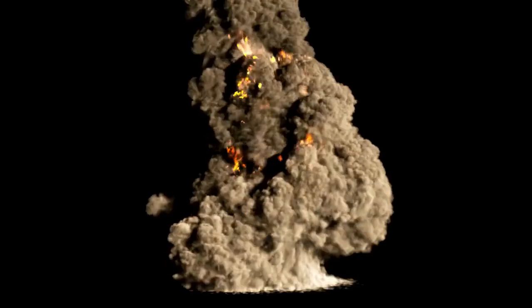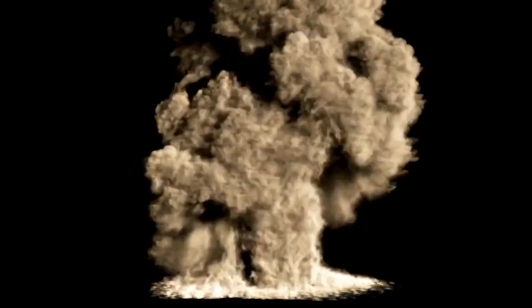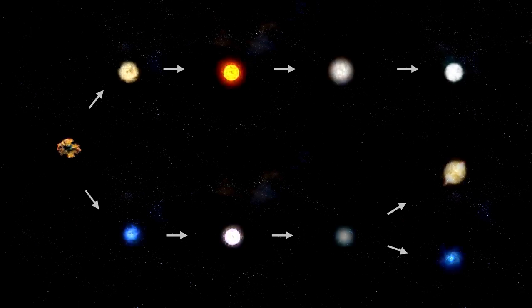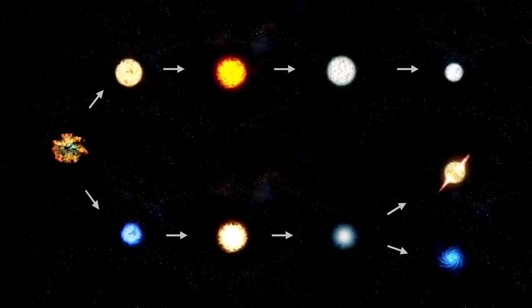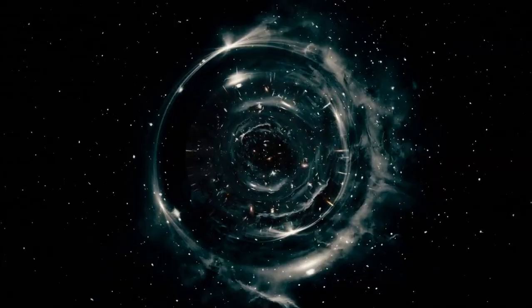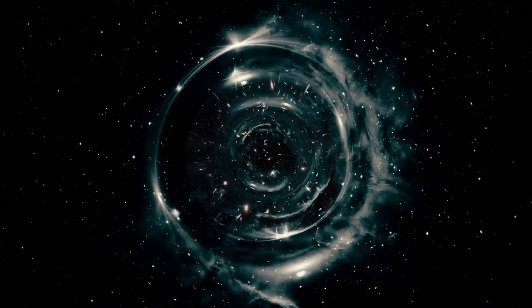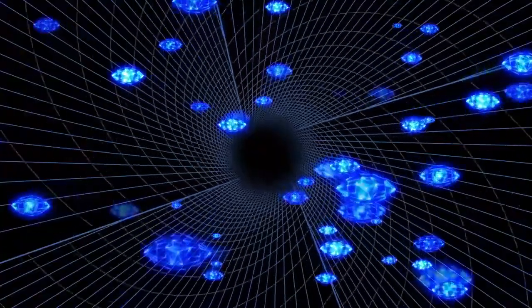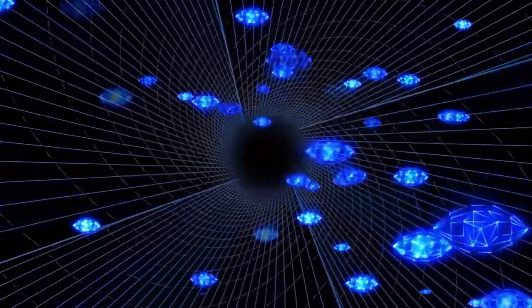When the explosion occurs, Betelgeuse will release an immense amount of energy, more in a few minutes than our sun will emit over its entire lifetime. This energy will take the form of visible light, gamma rays, and other forms of radiation. The shockwave from the explosion will travel outward, dispersing heavy elements like iron, gold, and uranium into the surrounding interstellar medium.